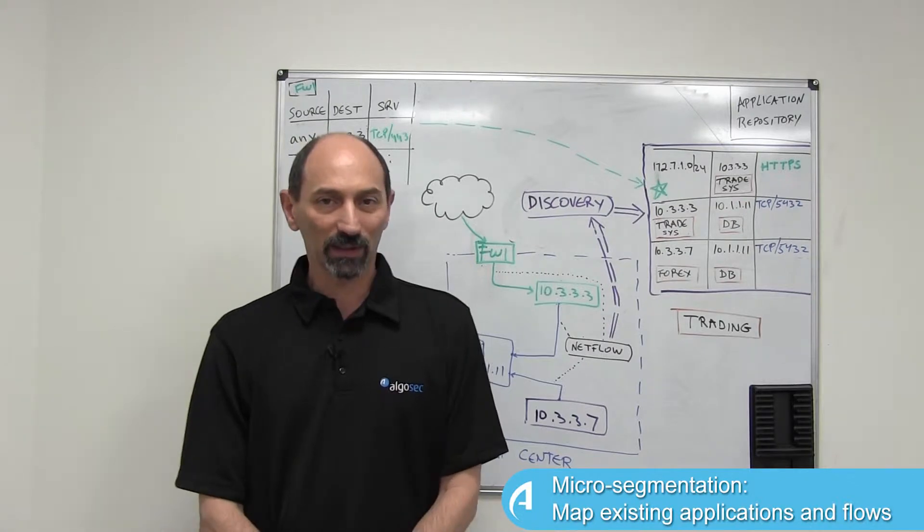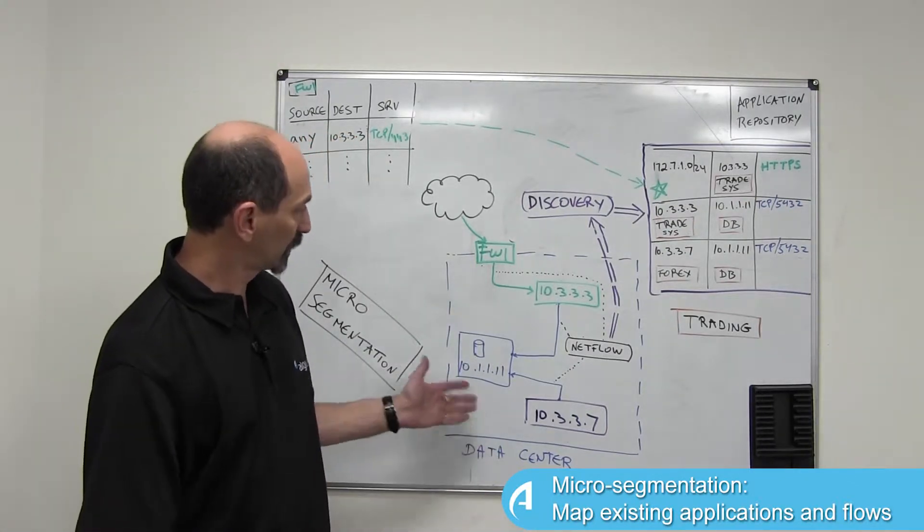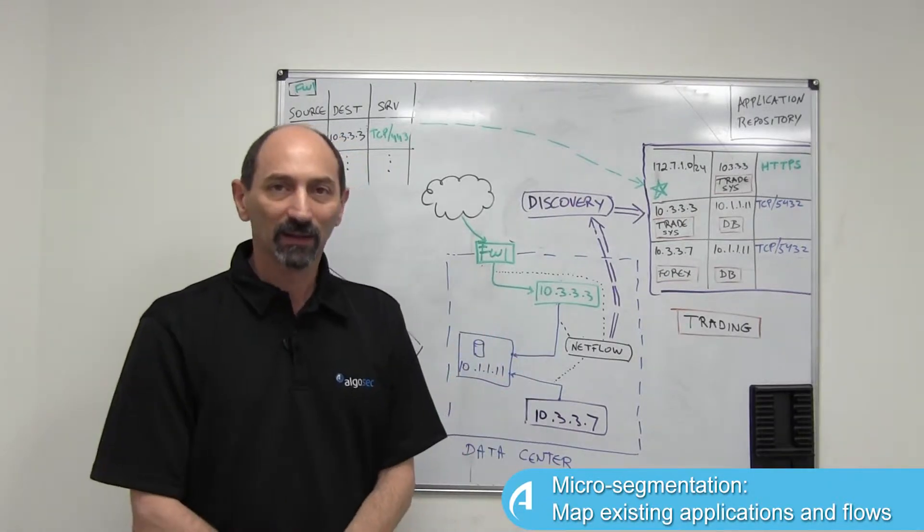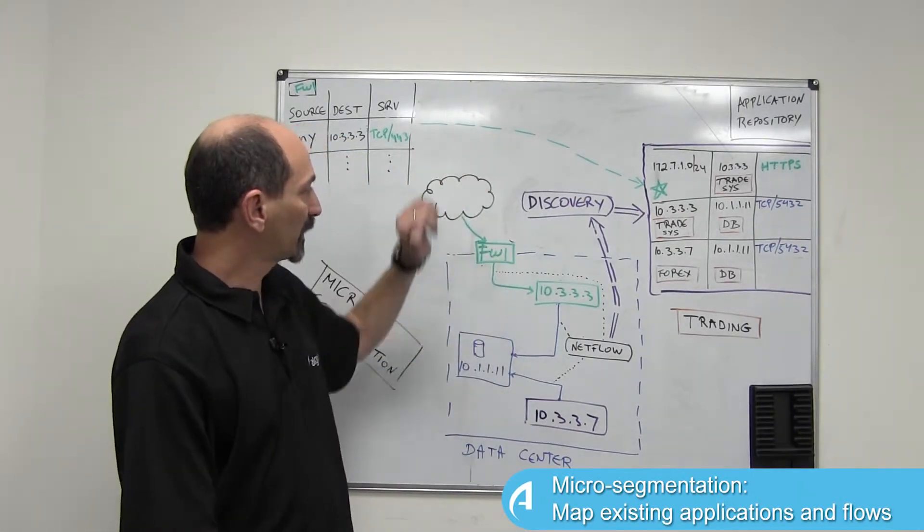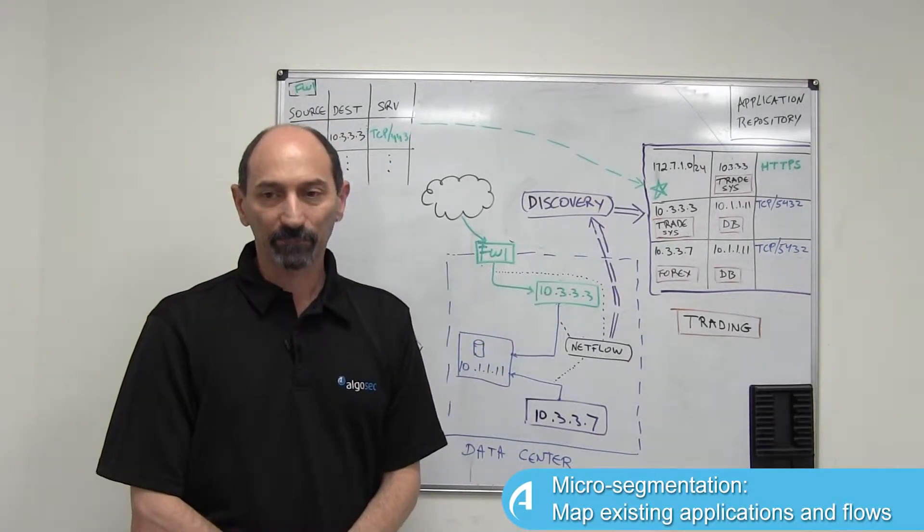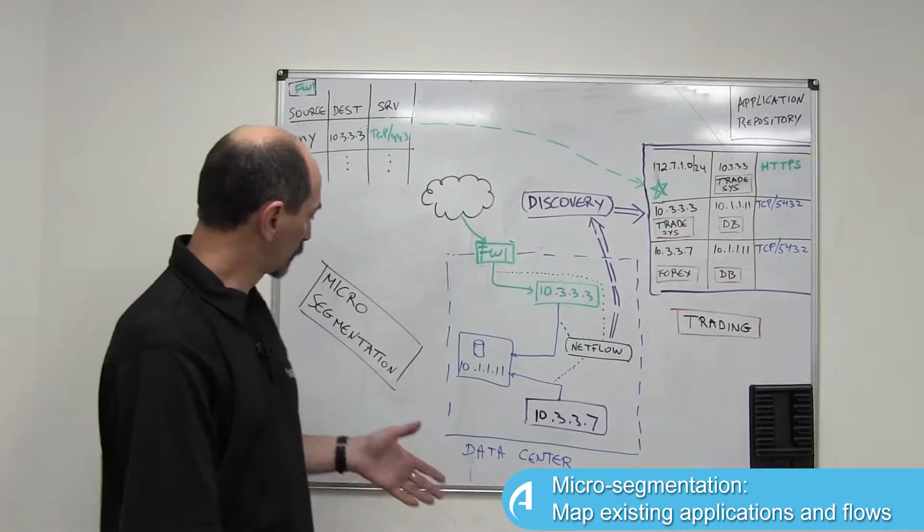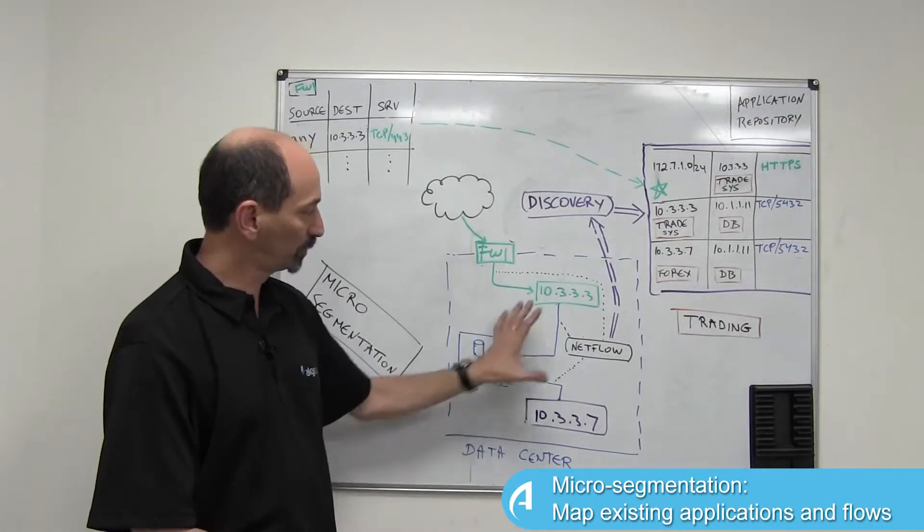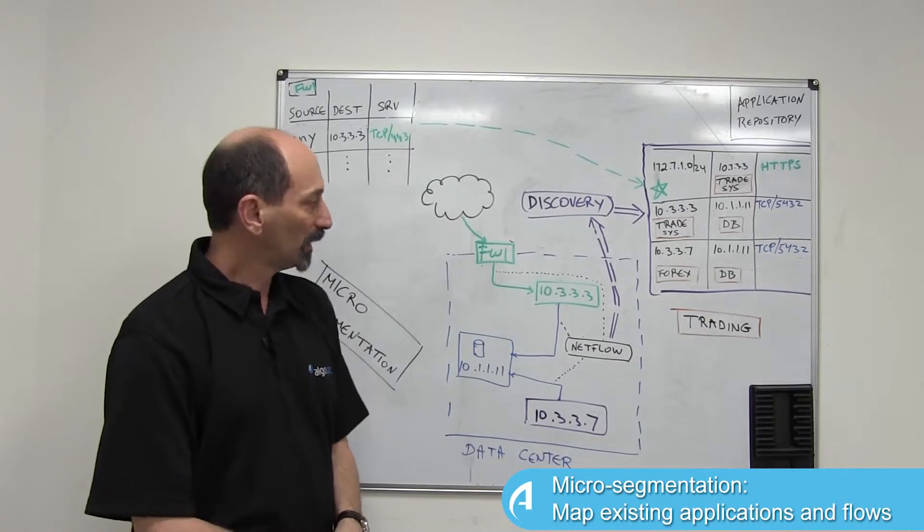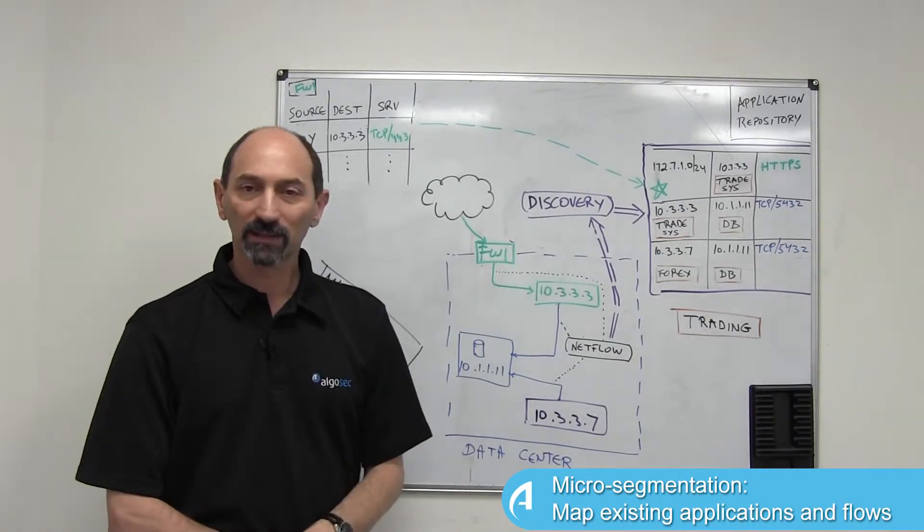So imagine that you're running a data center in this blue square over here. It has various systems inside it. It's separated from the outside world by a firewall but internally traffic is unfiltered and you want to introduce micro segmentation to protect pieces inside your data center from each other to become more robust against various attacks.